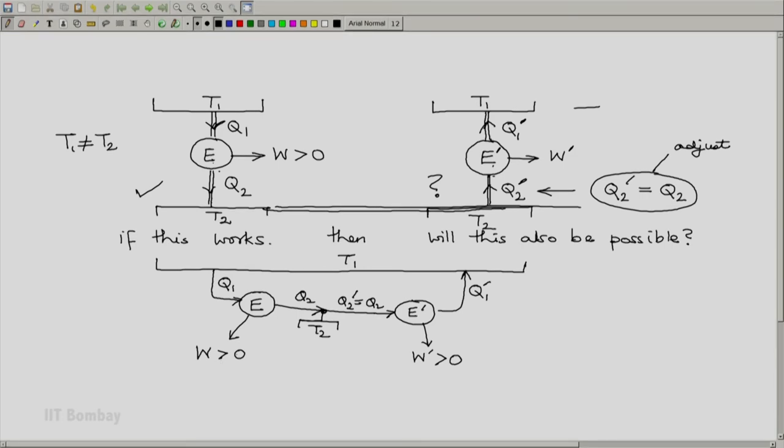First, W is greater than 0. Consequently, Q2 will be less than Q1. Why? Because W is Q1 minus Q2. If W is positive, Q2 has to be less than Q1. Now here Q2 prime equals Q2, so we have Q2 prime less than Q1. Now some positive work is extracted and we will have by the first law, remember E prime is also a cyclic device, Q2 prime equals Q1 prime plus W prime. And since W prime is positive, Q1 prime will be less than Q2 prime. And hence we will have Q1 prime less than Q2 prime, which has been shown to be less than Q1.